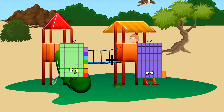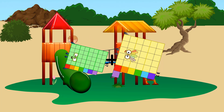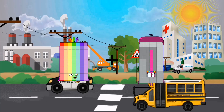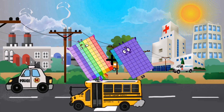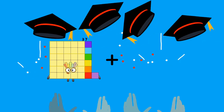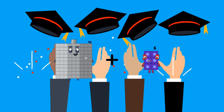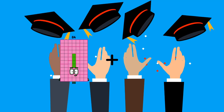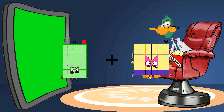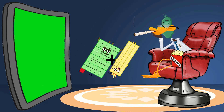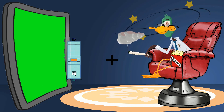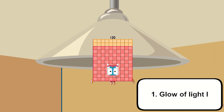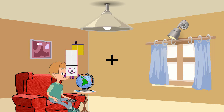47 plus 37 equals 84. 77 plus 65 equals 142. 90 plus 96 equals 186. 41 plus 30 equals 71. 54 plus 66 equals 120. 80...